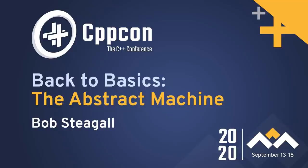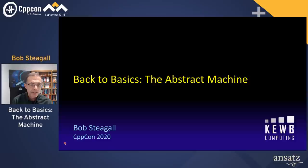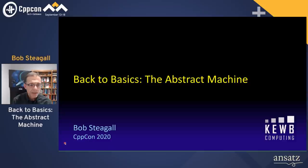Hello everyone, and thank you for coming. My name is Bob Stiegel, and I have the privilege of presenting the first talk at this year's Back to Basics track, CPPCon 2020. Each session in this track is about a single concrete topic like this one, which is about the C++ abstract machine. Many thanks to our Back to Basics chair Arthur O'Guire, and to our conference chair John Kolb, for making CPPCon such a great conference.